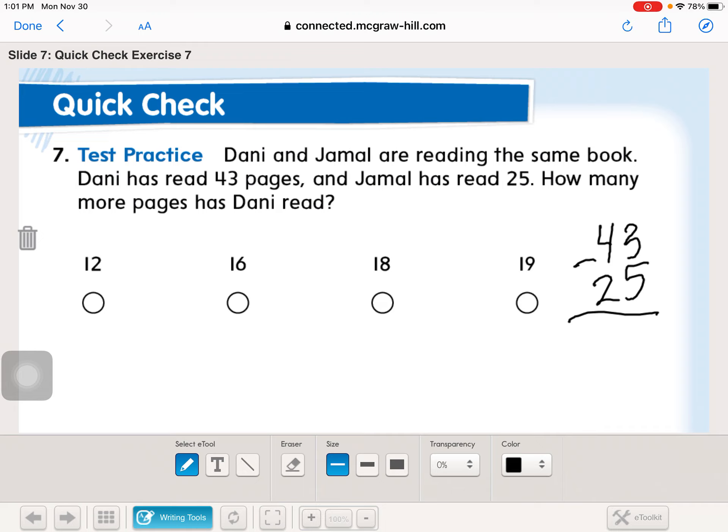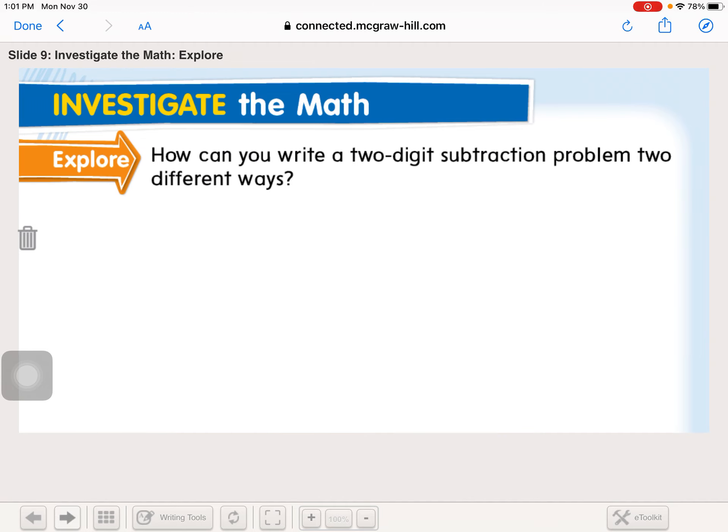We're going to line them up, up and down. We see here that five is bigger than three. So we're going to go next door and regroup 10 more. Take a ten, break a ten. 13 minus five, eight. Three minus two, one, which leaves us with 18. I'm going to fill that little circle in. Whoa, got a little wild there.